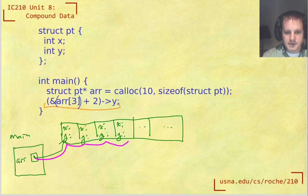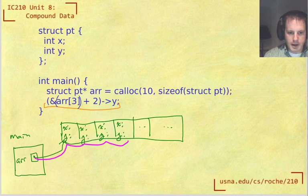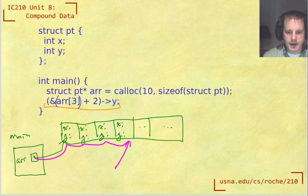Next thing that happens is the ampersand operator. That means we're going to draw a pointer to that. So now we have a pointer to this spot. Now we add two to that. What does it mean to add two to the pointer? We just offset that pointer.